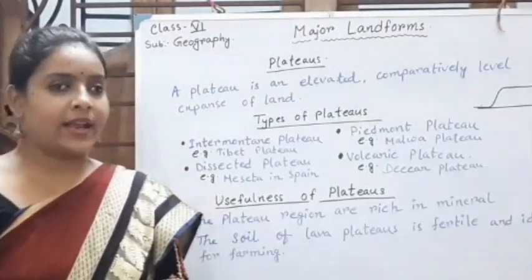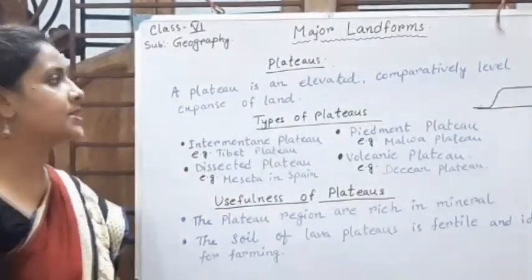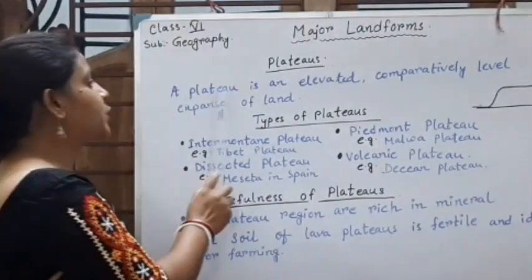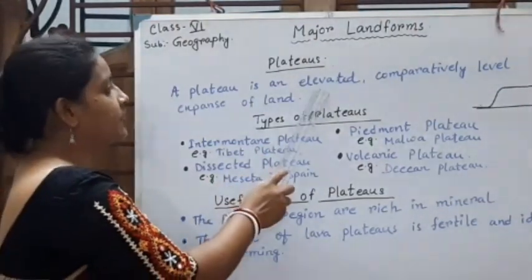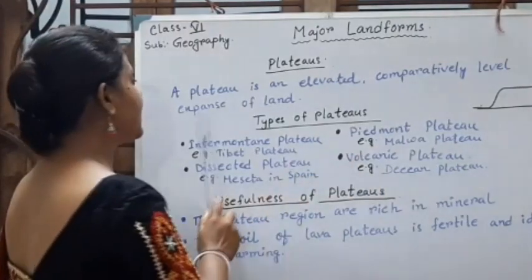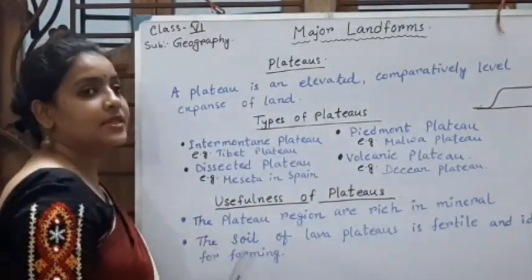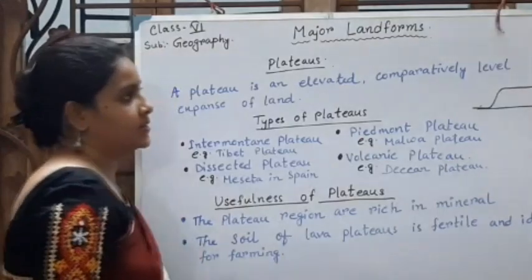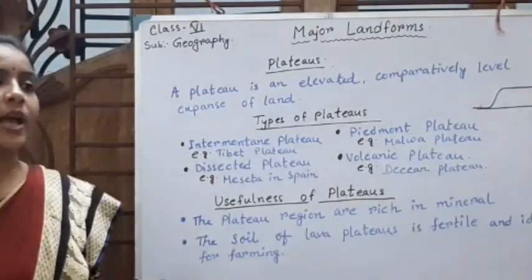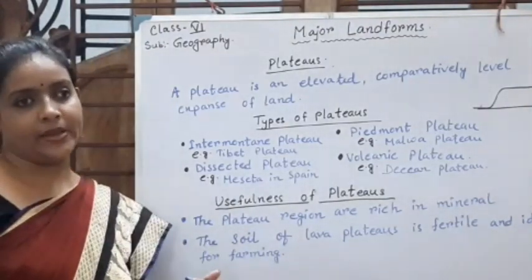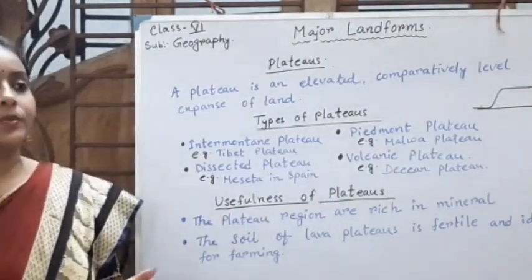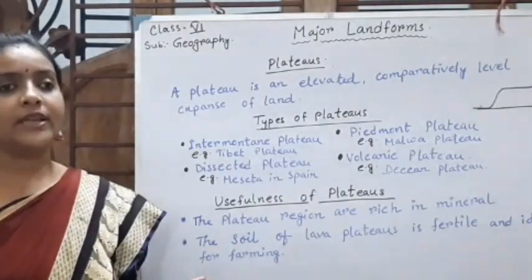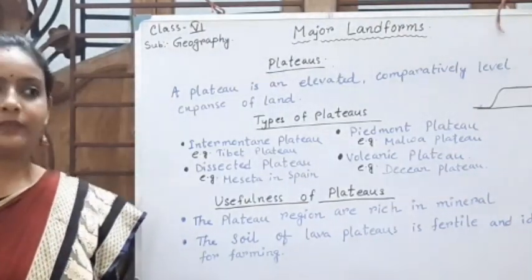Now come to the next landform: plateau. A plateau is an elevated, comparatively level expanse of land. It looks like a table land, so plateaus are also known as table land. A plateau can also form when a mountain gets eroded.